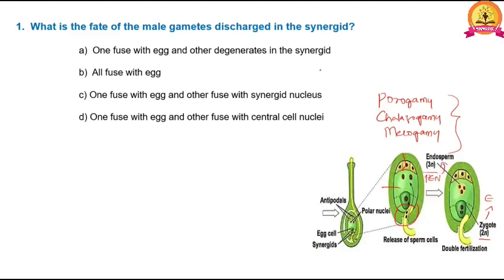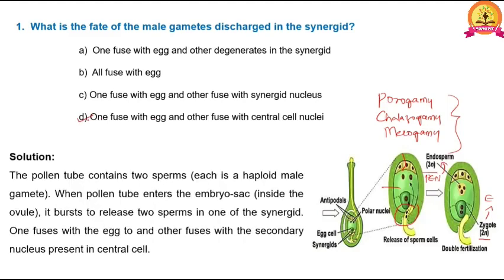Hence, the correct option is D: one fused with the egg and the other fused with the central cell nuclei.